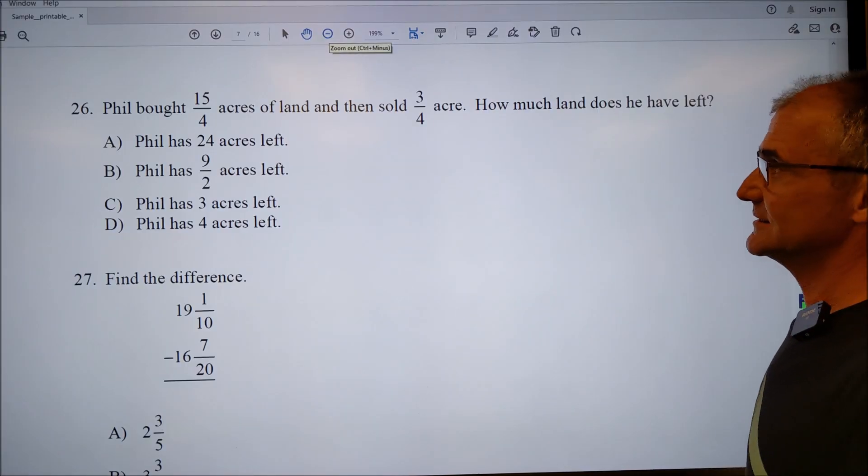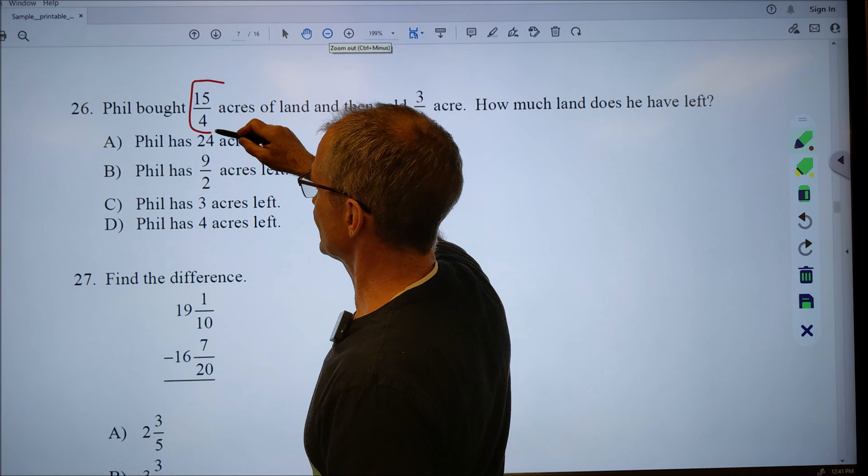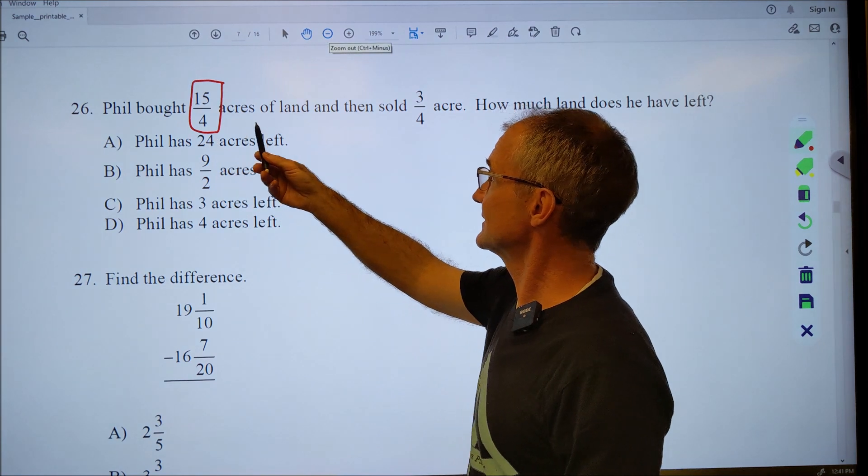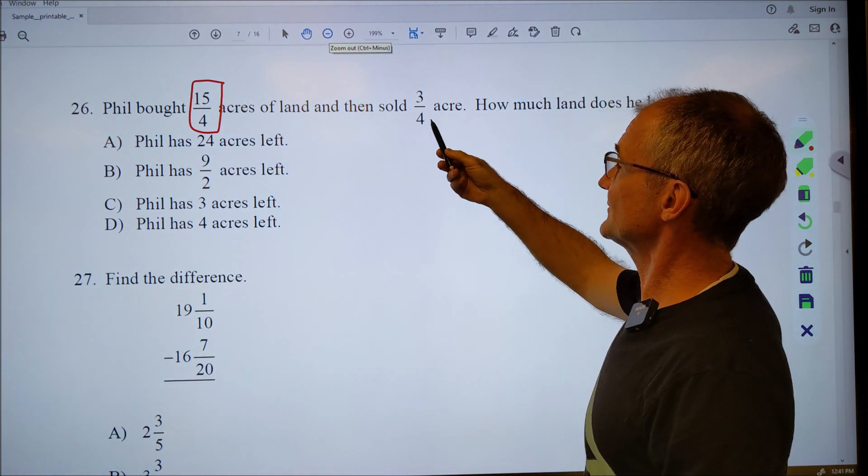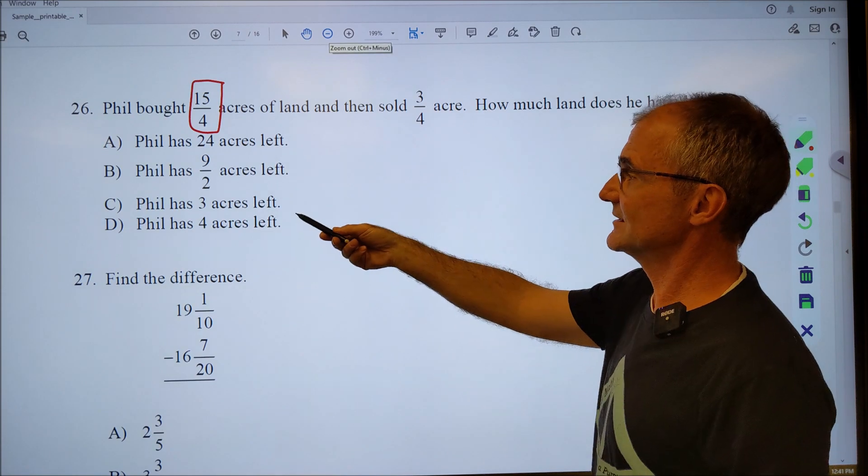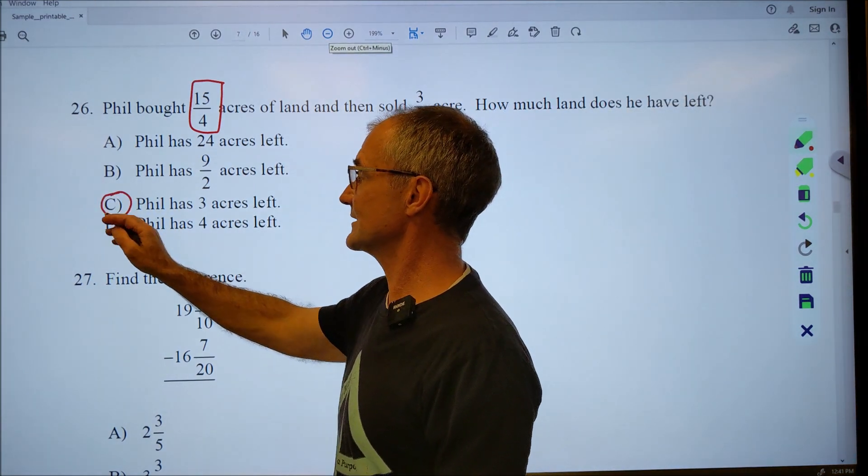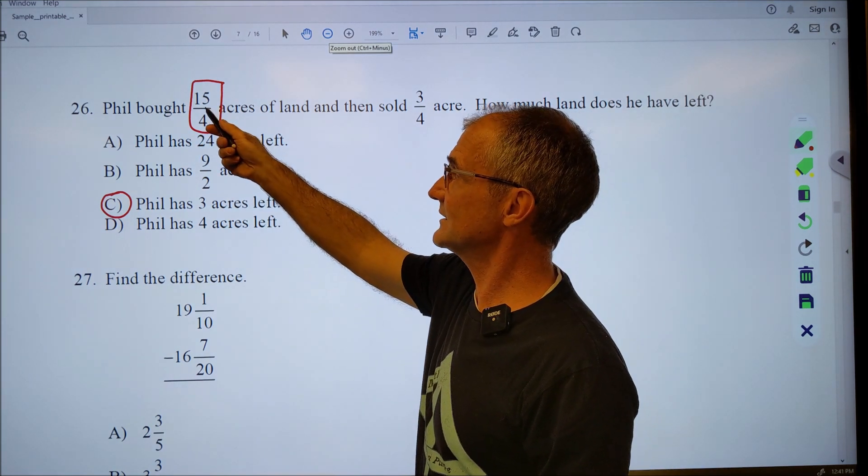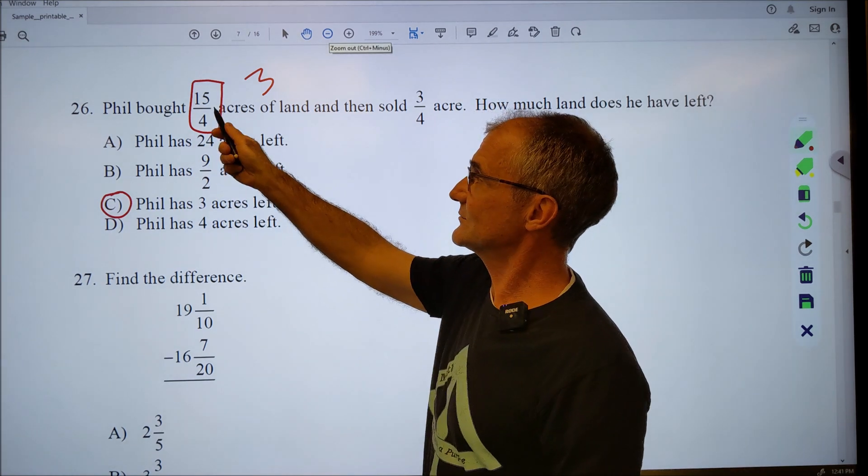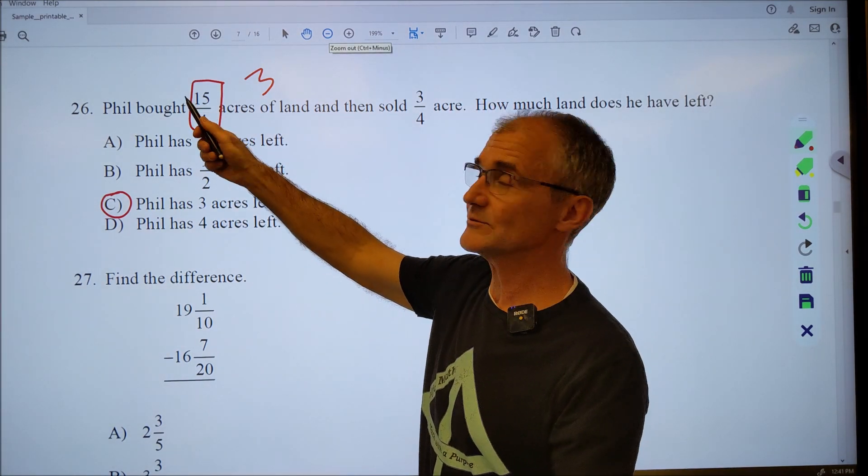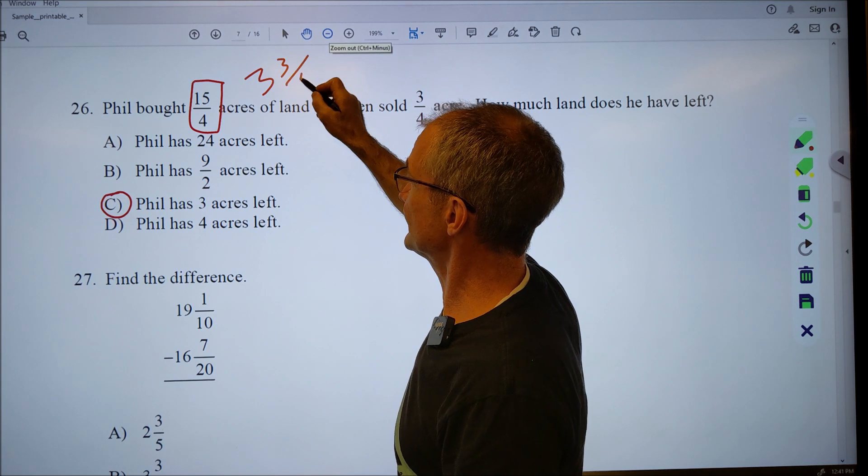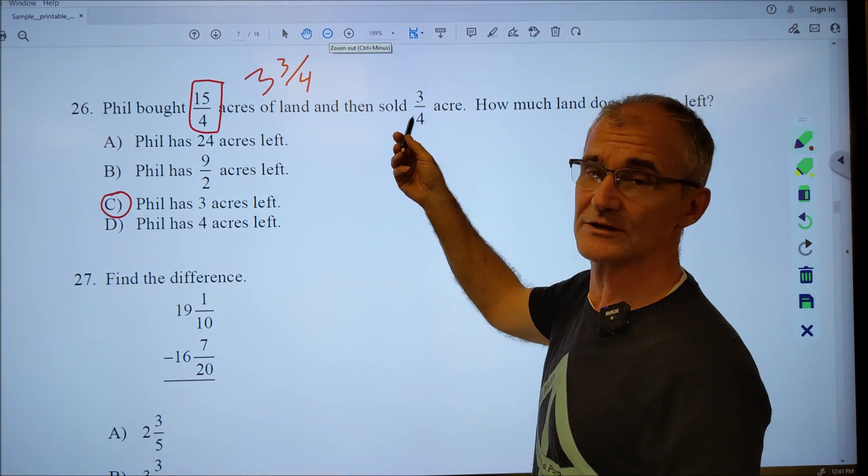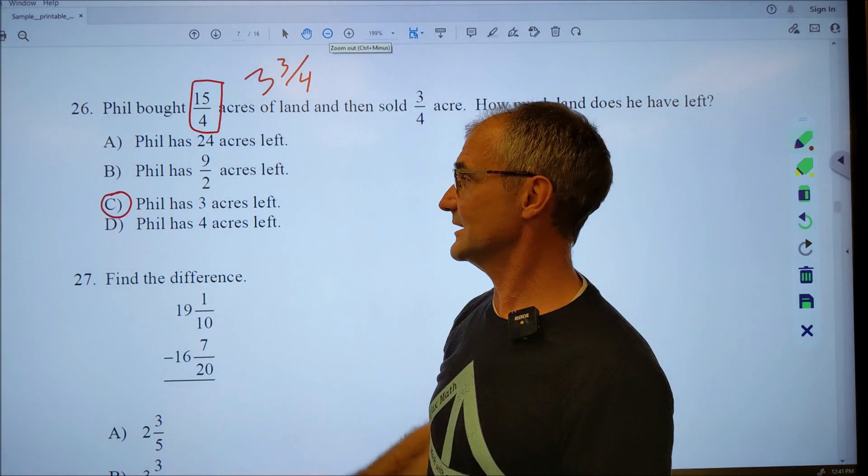Number 26, Phil bought 15 fourths of an acre of land. So that's going to be three and three fourths of an acre and he sold three fourths of an acre. So you could see what's left is going to be three acres. I did that one pretty quickly because I converted this into a mixed number. The way I did that is four goes into 15 three times. After it goes in there three times, that's 12. Fifteen minus 12 is three. So it's three and three fourths left over. I could have done 15 fourths minus three fourths to get 12 fourths and reduce that fraction to three acres.